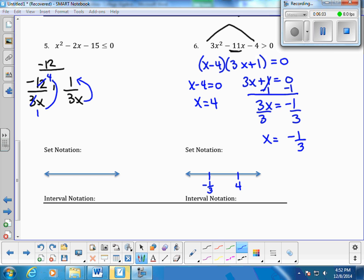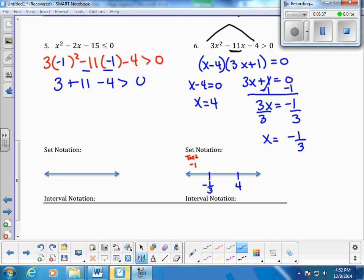Now, we need to go back and test regions. I can pick any number to the left of this that's negative. And I'm just going to pick something easy. I'm going to test negative 1. Go back into your original function. Everywhere there's an x, put a parenthesis and plug in negative 1. Negative 1 squared is positive 1. So, 3 times 1 is 3. Negative 11 times negative 1 is positive 11 minus 4. 14 minus 4 is 10 is greater than 0. That is true. That means this is part of my answer.